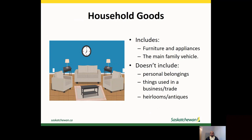Household goods doesn't include heirlooms, antiques, works of art, clothing, jewelry, articles of personal use, or things used in connection with either spouse's work. For example, if a spouse regularly brings home a laptop to do work at home, the laptop is not considered a household good.